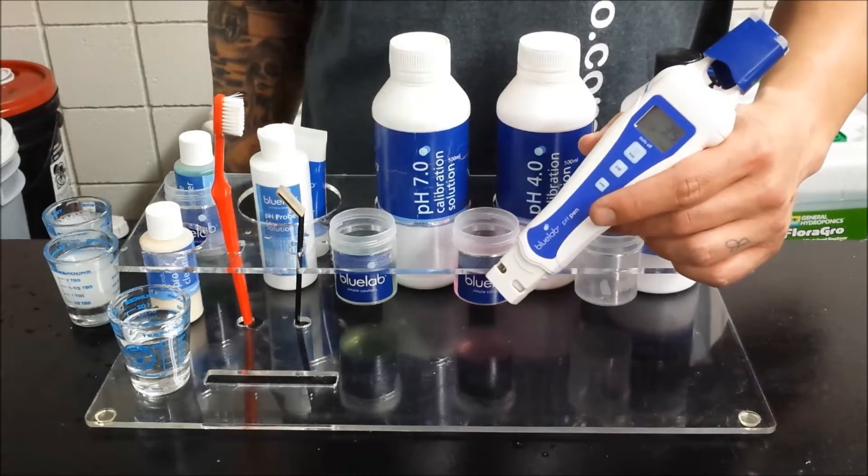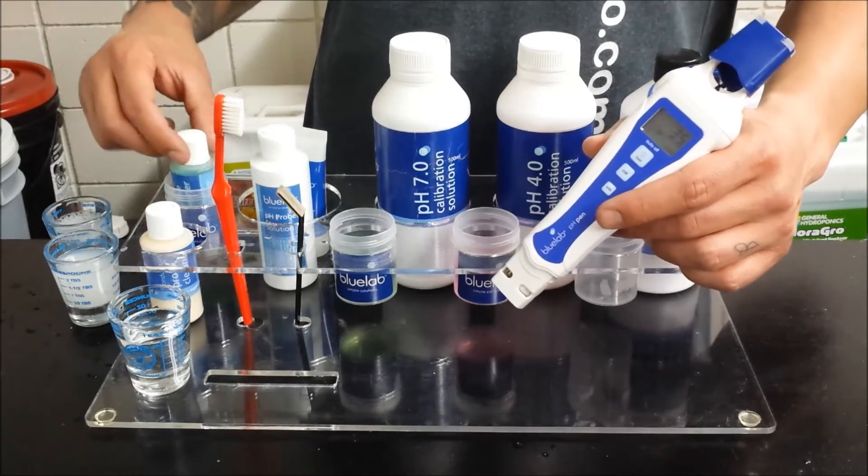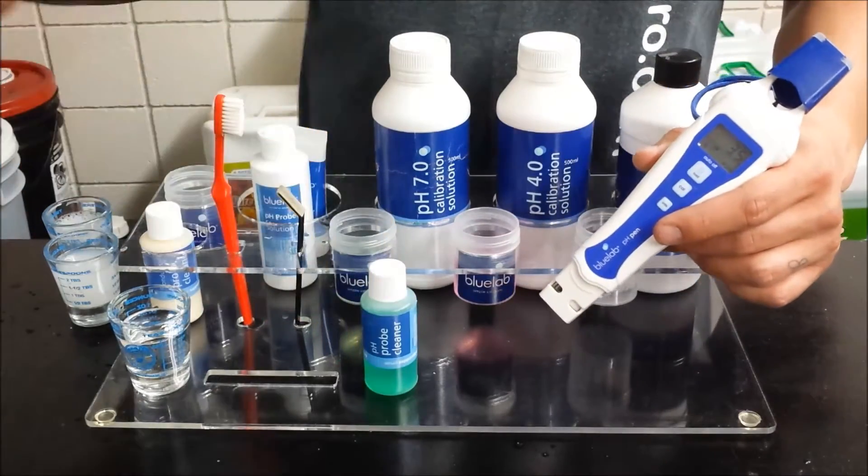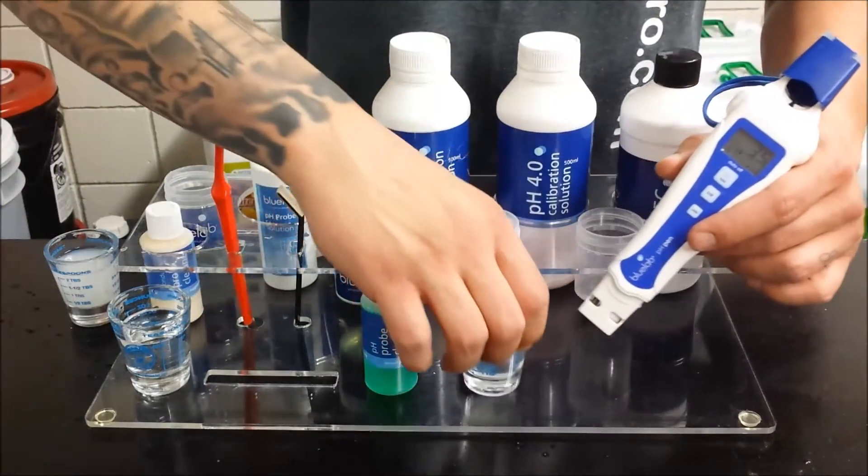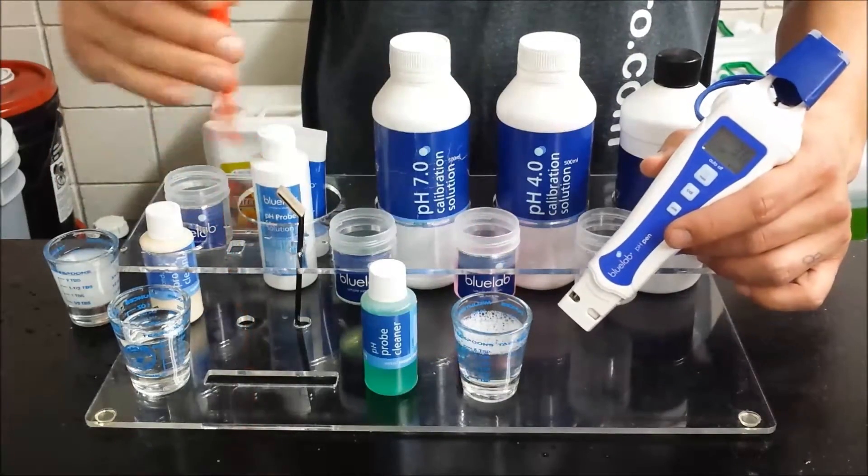First things first, you want to make sure your pH probe is clean for calibration. So we have some Bluelab pH probe cleaner here. Mix a few drops with water to get your cleaning solution.